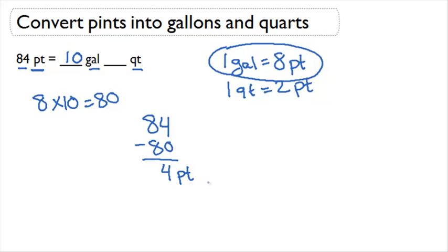Now let's see how many quarts we can fit in four pints. We know that one quart is equal to two pints. So let's divide our four pints by two to find that this gives us two quarts. In four pints there are two quarts. So I can fit ten gallons and two quarts into 84 pints.